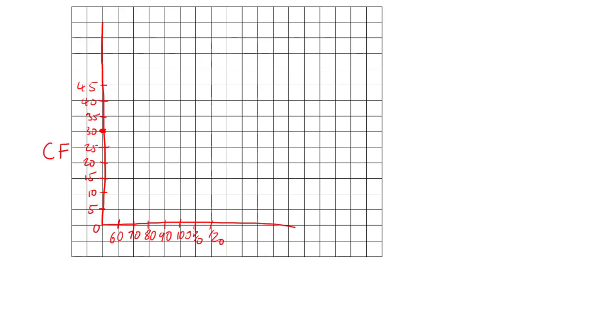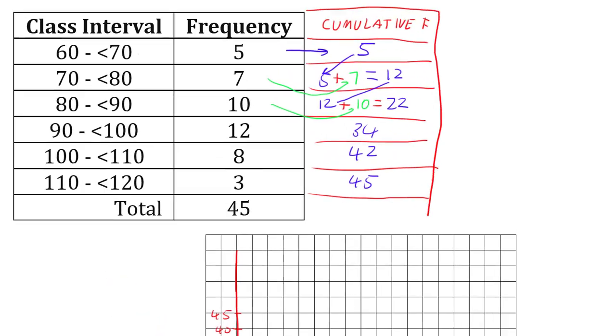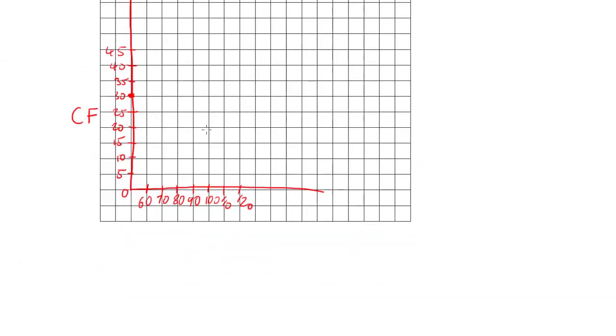So we have 60, 70, 80, 90, 100, 110, 120, and now we have space for all our data. We'll call this axis score or data. So that's our axes set up.